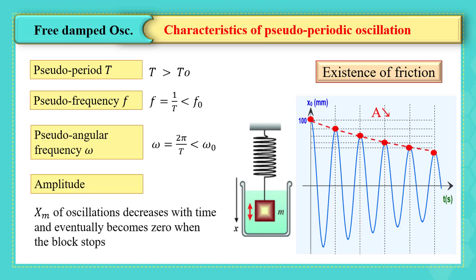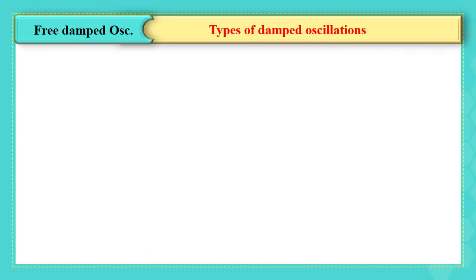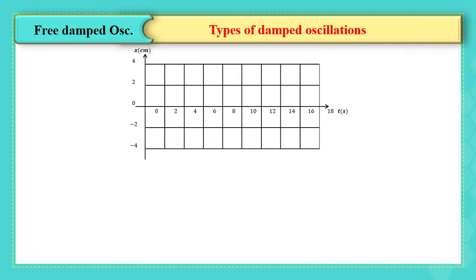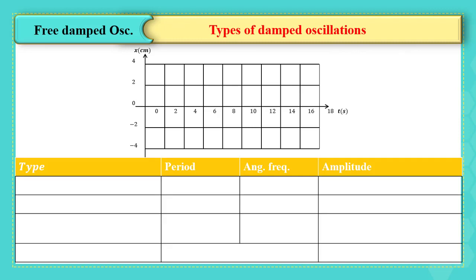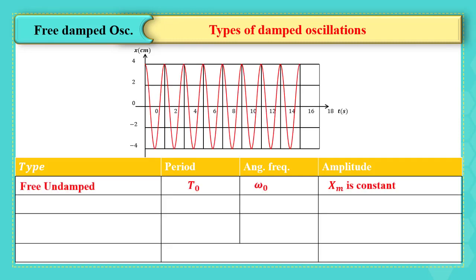There are different types of damped oscillations. Before, let's remember the free undamped mechanical oscillation, where it has a proper period T0, proper angular frequency omega zero, and the amplitude constant.